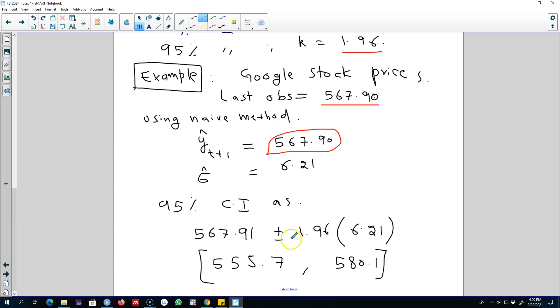We can calculate the 95% confidence interval as our forecast plus minus 1.96, because we are calculating 95% confidence interval and remember the value of K for 95% confidence interval is 1.96, and then we have to use this sigma.